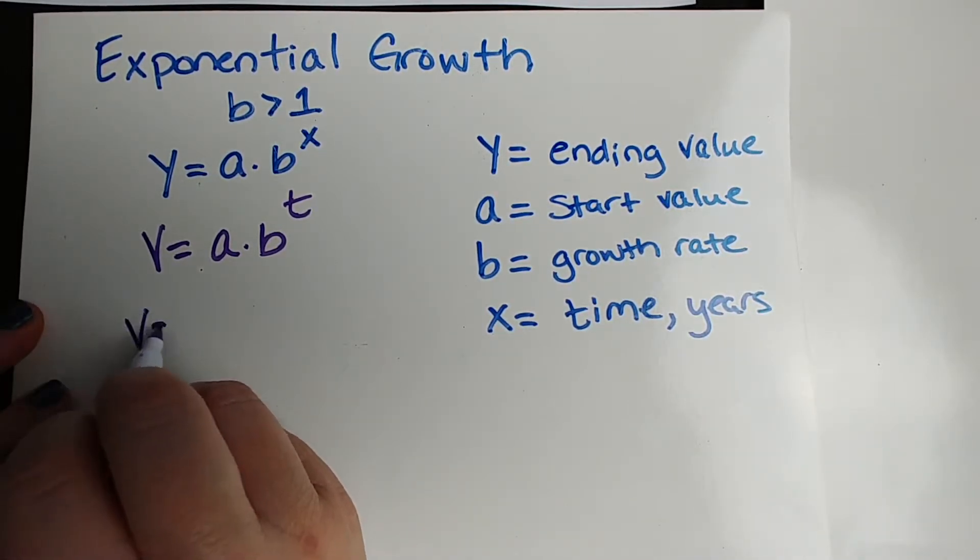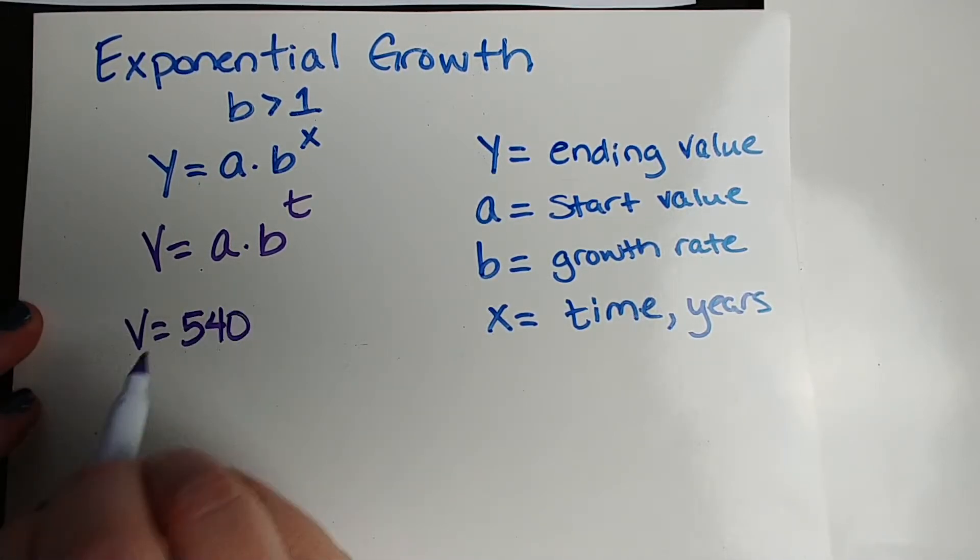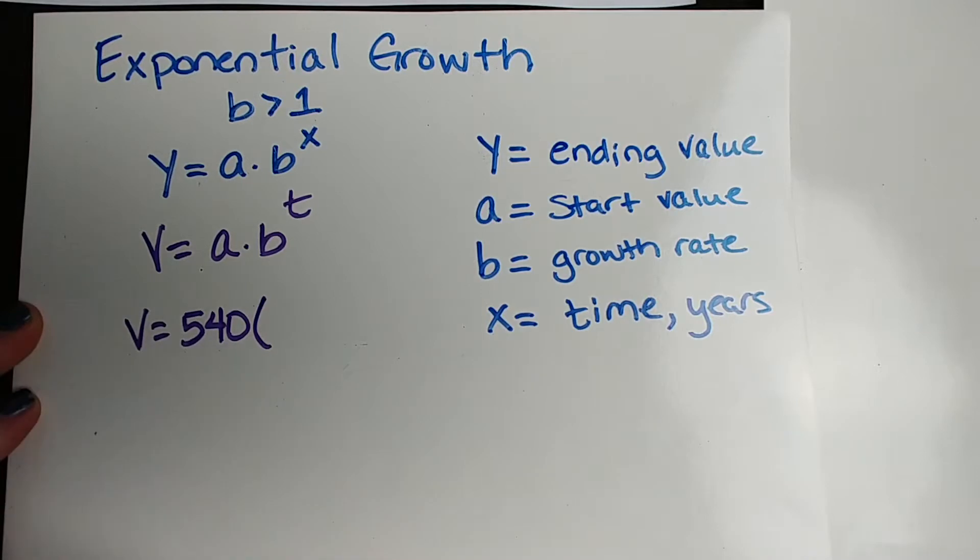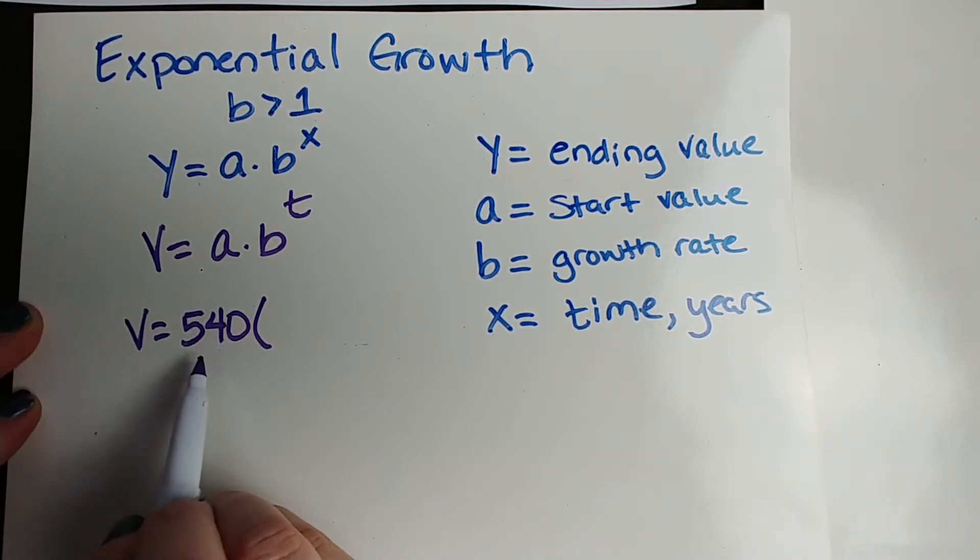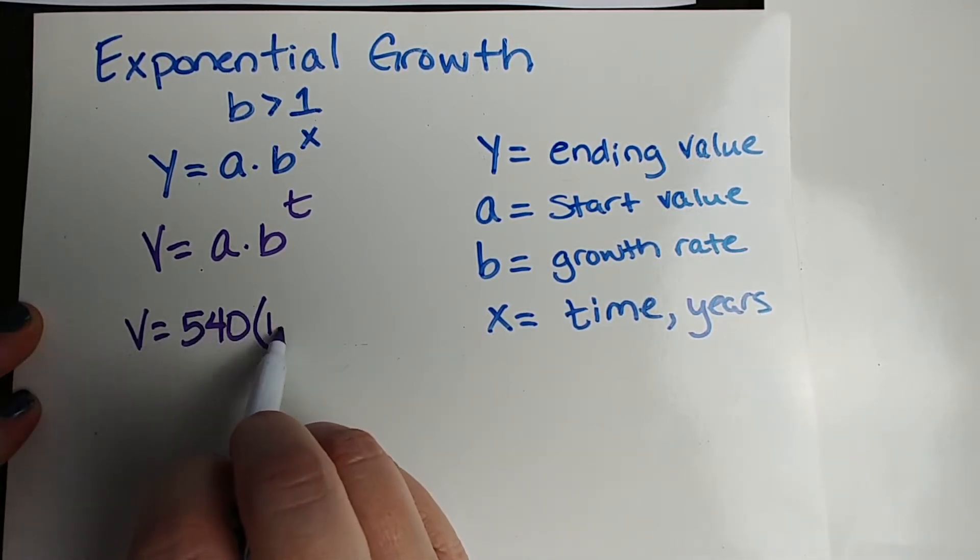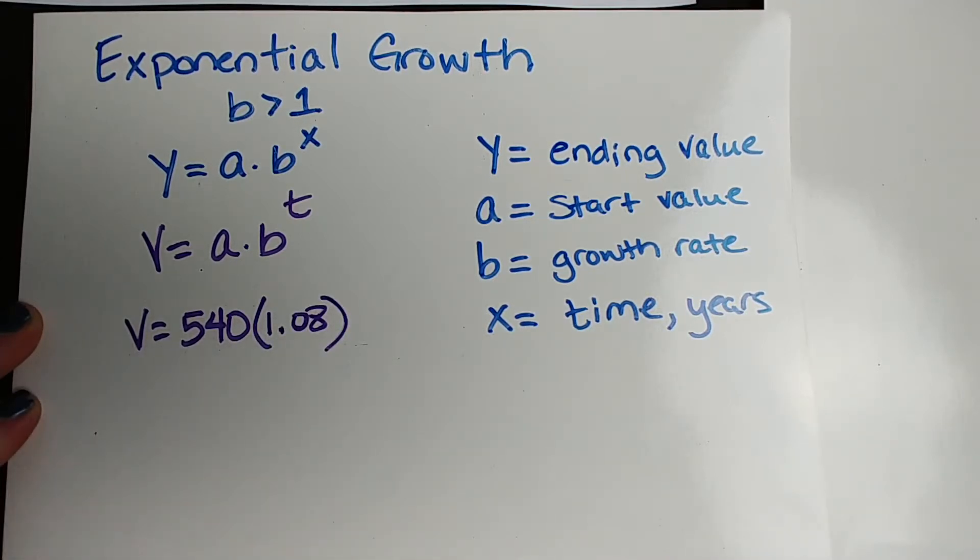The ending value is what we're solving for. We don't know what that is. Starting value, $540, the amount she paid for the painting. The growth factor, now we can't put 0.08. First of all, that would be less than 1, that would decay by 8%. We need to put 1 plus the growth factor, 1 because that includes the value of 540 in it. So 1.08, very similar to when we're doing compound interest problems.